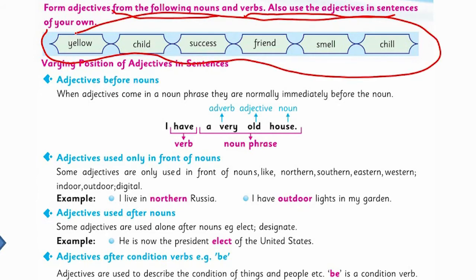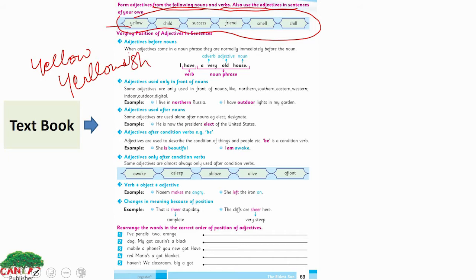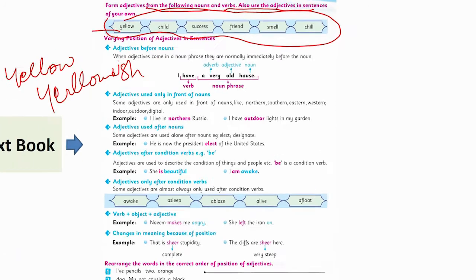For example, the first word could be 'yellow' — to make it an adjective, you add the suffix '-ish' to form 'yellowish'.